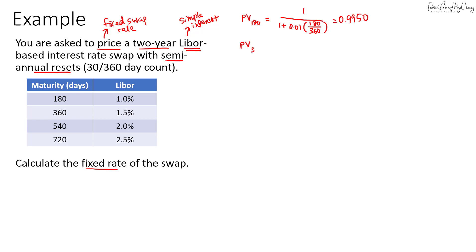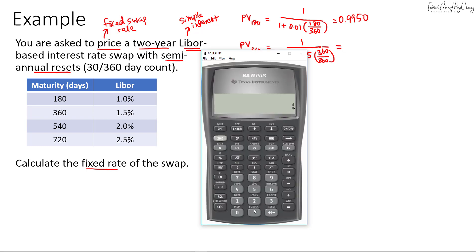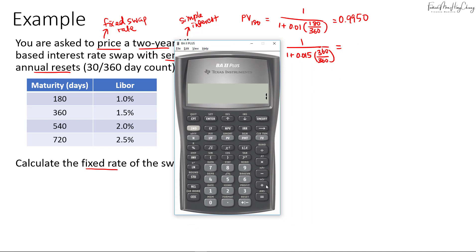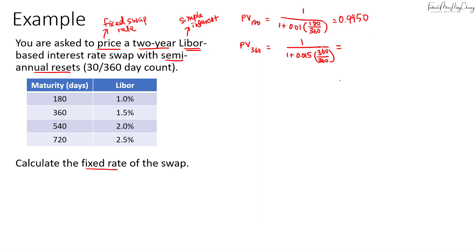And then for the next present value factor that's 360 days so that's 1 over 1 plus 0.015 times 360 over 360. So let's calculate that. This will be 1 plus 0.015 which is multiplied by 1 that's 360 over 360. And then so that's 1.015 and then we invert it so that's 0.9852. We save it store 2. So that's 0.9852.